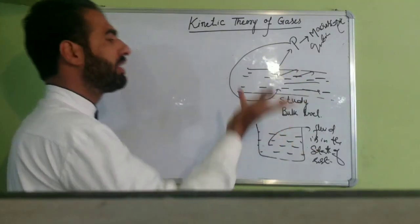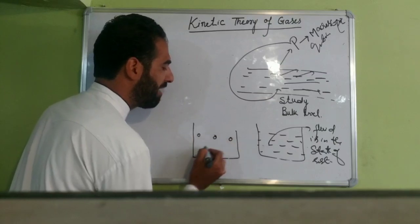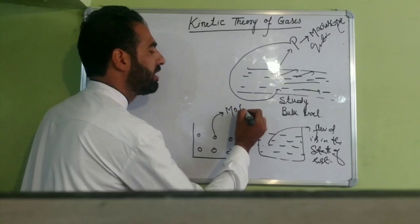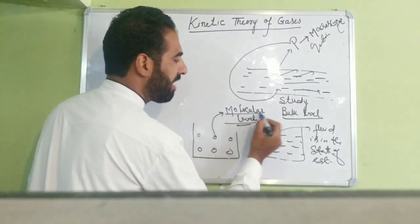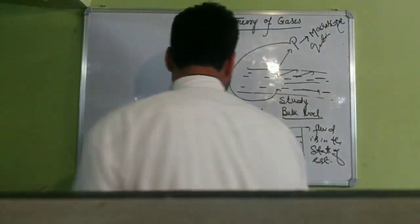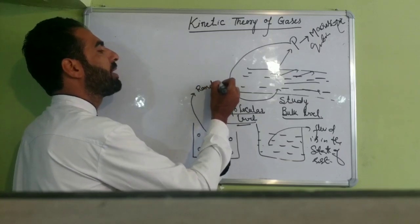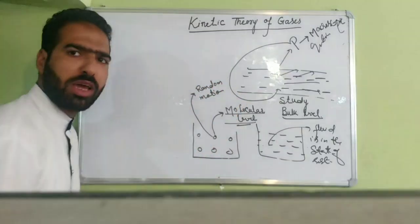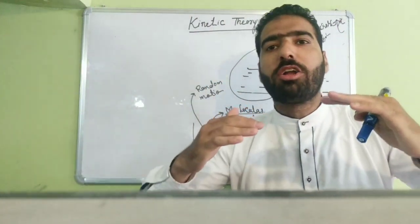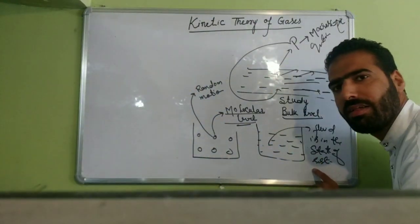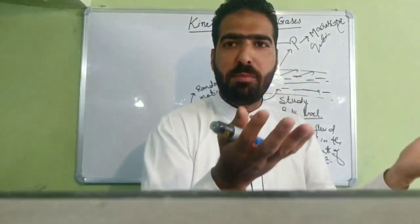Now I want to study the same fluid at the molecular level. At the bulk level, the whole fluid is in the state of rest. But at the molecular level, these molecules are continuously in random motion — continuously moving in all possible directions. So at bulk level this fluid appears to be at rest; at molecular level it appears to be in random motion.